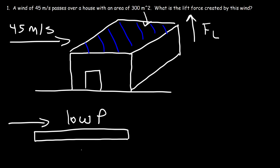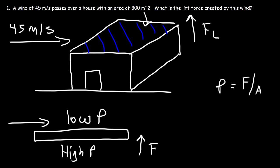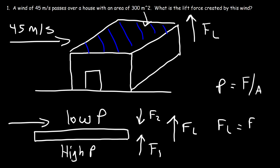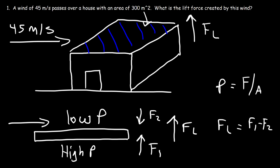There's no air flow beneath the roof or inside the house, so we have a high pressure region. Since pressure is force over area, the high pressure is going to create an upward force F1, and the low pressure will create a downward force F2. The difference in these two forces is the lift force FL. F1 is going to be greater than F2 due to the higher pressure at the bottom, and that's why when wind passes over the house it creates a lift force.